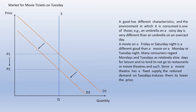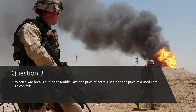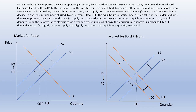Moving on to question three: when a war breaks out in the Middle East, the price of petrol rises and the price of a used Ford Falcon falls. A Ford Falcon is a big gas-guzzling Australian car — think of a large truck in American terms. Let's look at the market for petrol first. A war breaking out in the Middle East will have a detrimental effect on supply, so we shift supply to the left, giving us a higher price and a lower quantity.